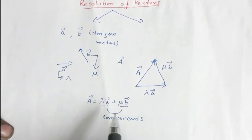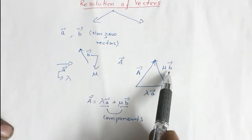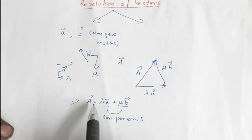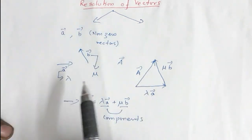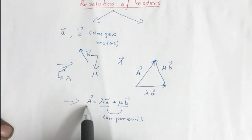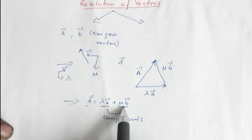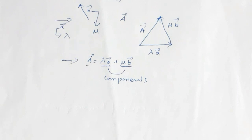These are the two components: one component is in the direction of vector A and the other component is in the direction of B. So this is one way of resolving a vector. Resolution means breaking into components — I have broken vector A into two components, lambda A and mu B.